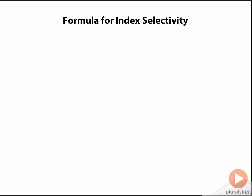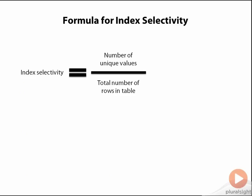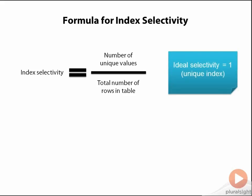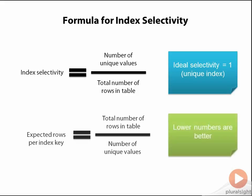Let's formally discuss a formula that we can use to calculate and compare the selectivity for a column, because this will help us in evaluating if a column is a good candidate for an index. What we'll do is take the number of distinct values for the column in the index and divide this by the total number of rows in the table. So applying this formula, a unique index would have a value of 1, because we would have the same number of distinct values as there are rows in the table. Higher values as we approach 1 are better — these indexes are more selective and do a better job of discerning only the rows of interest, and therefore provide better performance. Another way of looking at this is to flip the numerator and denominator, dividing the total number of rows by the number of distinct values. This tells us, for any key value in the index, how many rows we would expect to be returned. In this case, lower numbers are better, because lower numbers mean we're being more selective and getting fewer rows back.